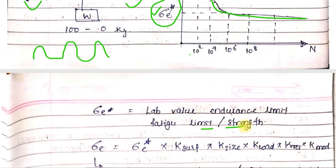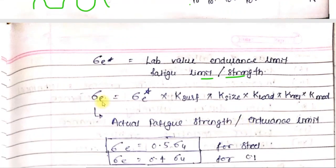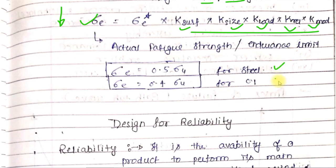This is called fatigue strength. But in practical applications, we also have to consider multiple factors like surface finish, size, load, and reliability. So we apply modification factors to get the practical endurance limit from the theoretical value.